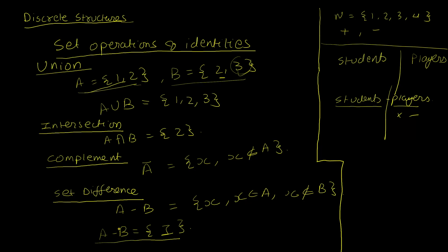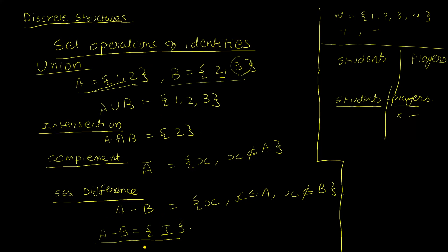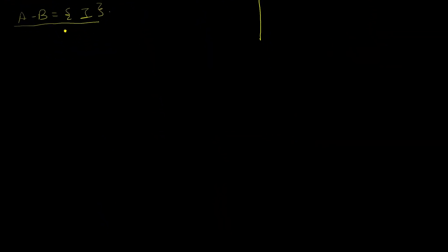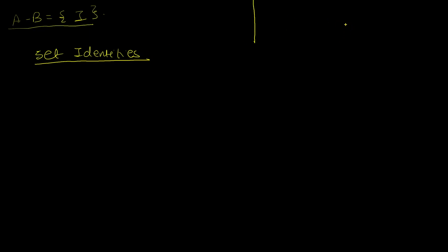Those are a few basic set operations. Next we look at set identities. An identity is an equation that is always true regardless of the variables. For example, x squared equals 2x is only true for x equals 0 or 2, but (x/2) times 2 equals x is always true — that is an identity.